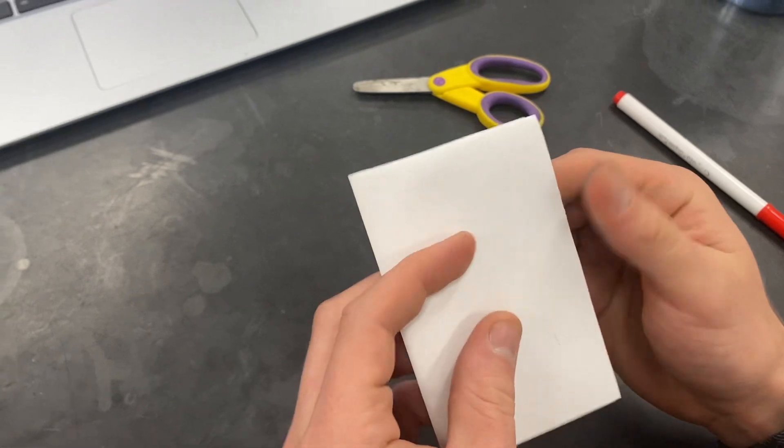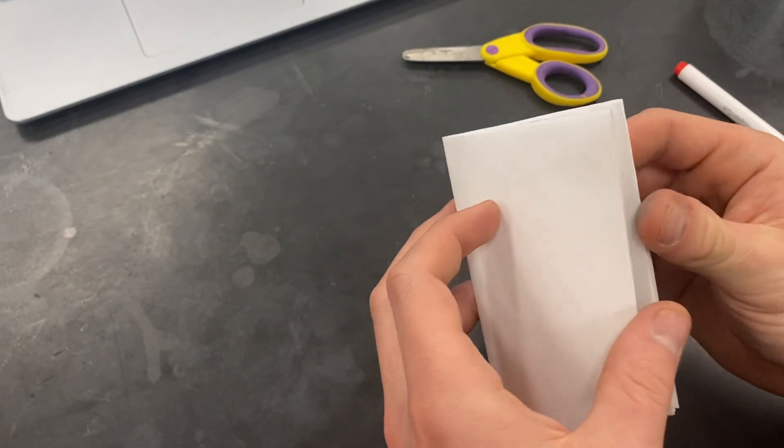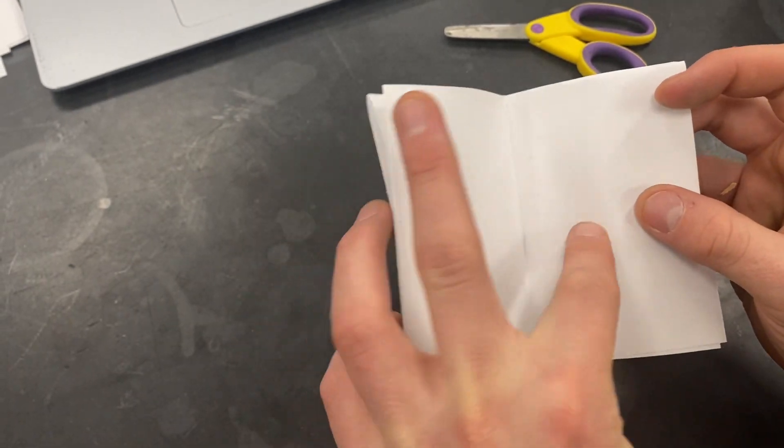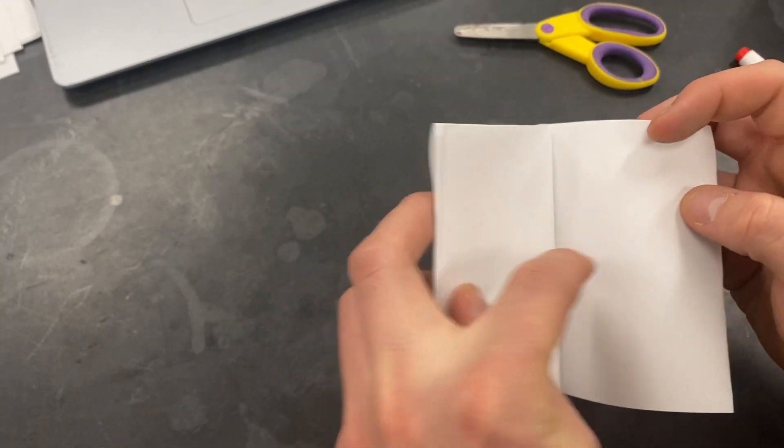So first page, you maybe would even label it, right? You might put number one here, number two, three, four, five, six, seven, eight. Nice. Single piece of computer paper.